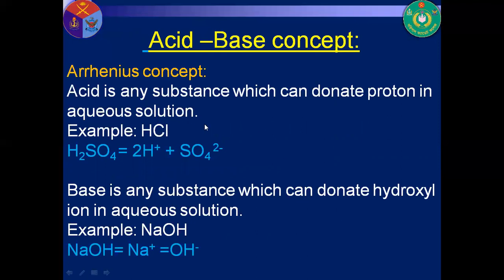Arrhenius concept: acid is any substance which, when dissolved in aqueous medium, produces protons (H⁺ ions). Base is any substance according to the Arrhenius concept which produces hydroxyl ions (OH⁻) in aqueous medium.